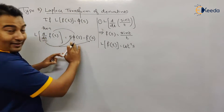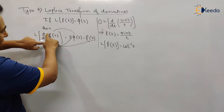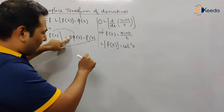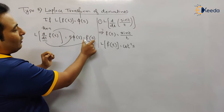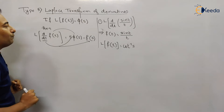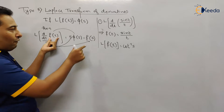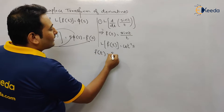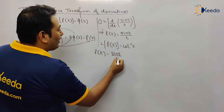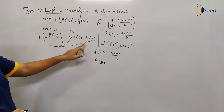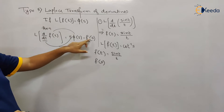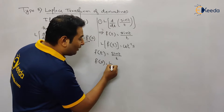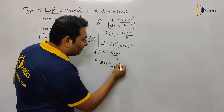Now we have φ(s) = cot⁻¹(s). We also need to find f(0). What is f(0)? f(t) = sin t / t, and in place of t we put zero. Finding f(0) means we need to take a limit, because putting t = 0 directly gives sin(0)/0 = 0/0.